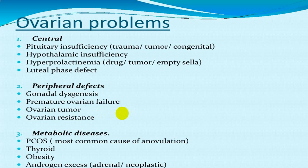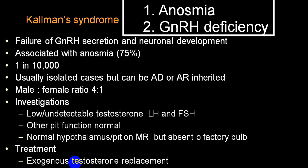Peripheral causes also include gonadal dysgenesis — which can be congenital — premature ovarian failure, and resistance of the ovary to FSH and LH. A third group of ovarian problems is metabolic disease, including polycystic ovary syndrome causing anovulation, hypothyroidism, obesity, and adrenal androgen excess such as congenital adrenal hyperplasia, where excess androgens can also cause failure of ovulation.